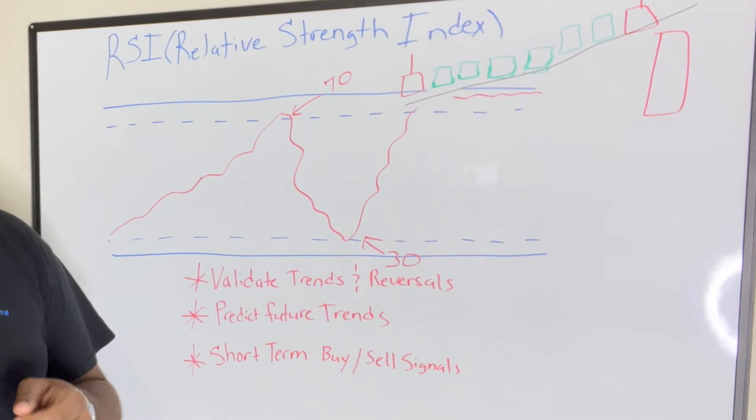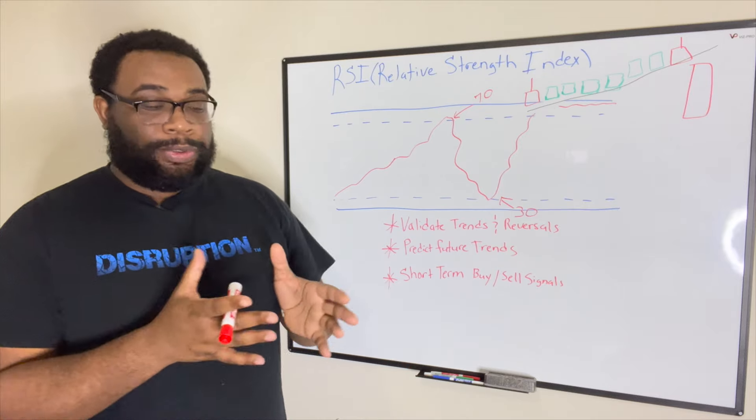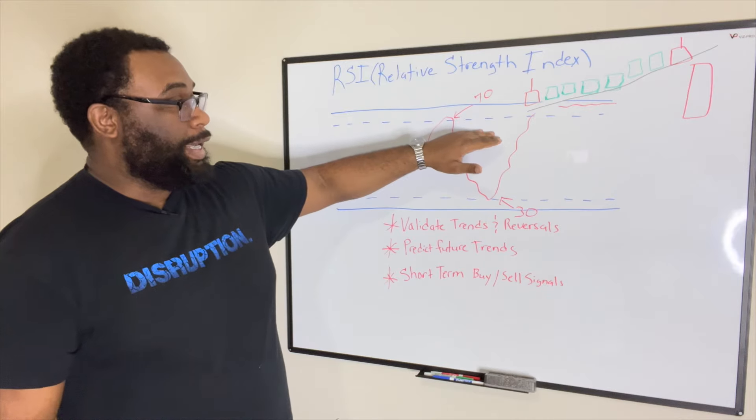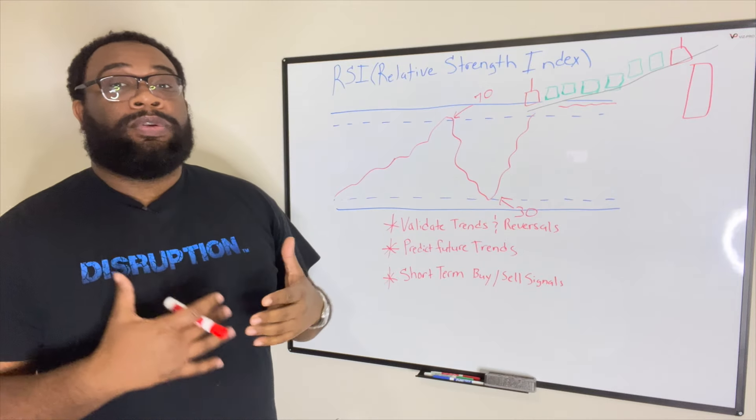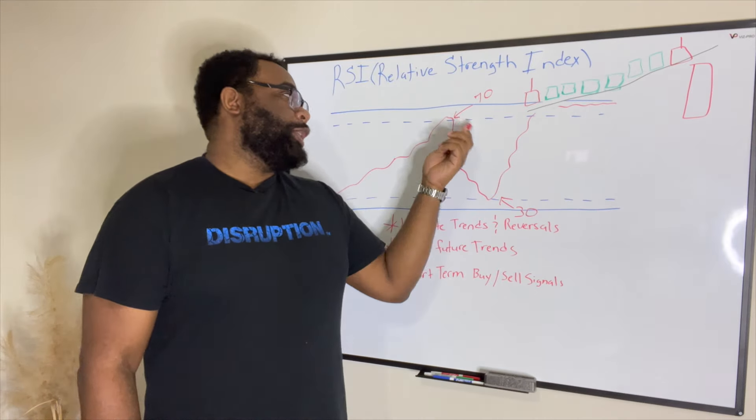What they don't tell you, what's not often taught on RSI, is things can stay overbought for a really long time. It does not mean it's an automatic reversal just because it hits 70.